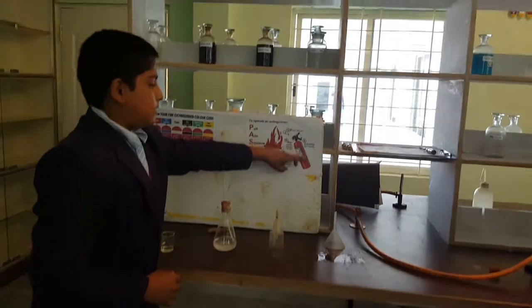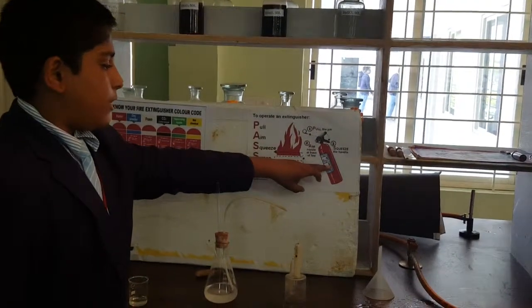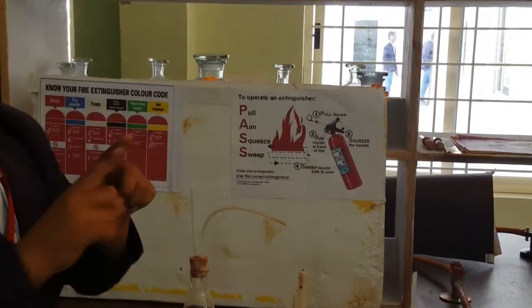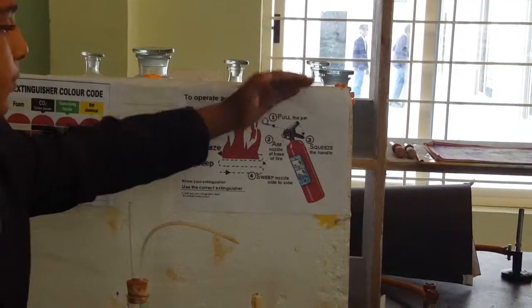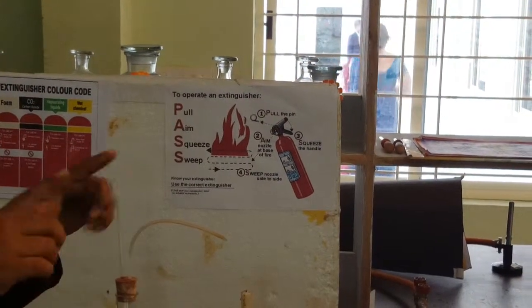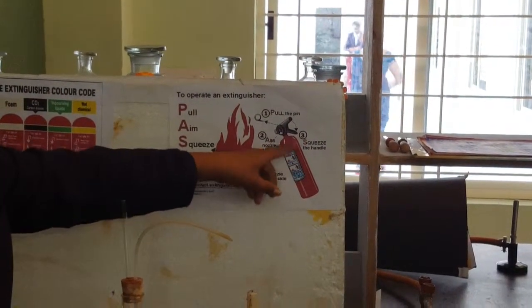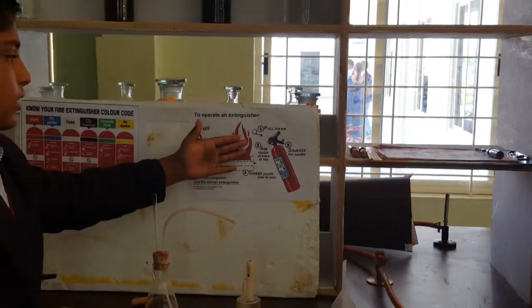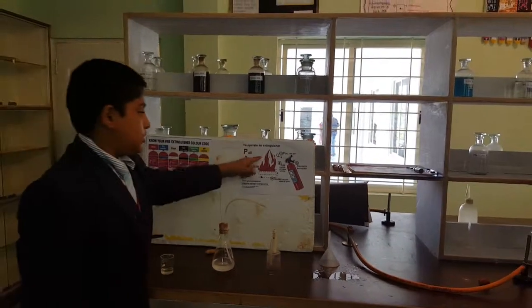This cylinder contains sodium bicarbonate, and inside that there is acetic acid which is placed separately in a glass. When we squeeze the handle, the glass of acetic acid breaks and reacts with sodium bicarbonate and comes out in the form of carbon dioxide that blows out the fire.